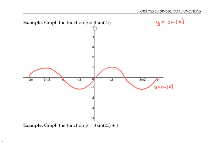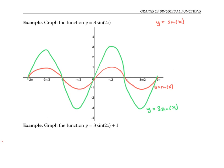The three on the outside stretches this graph vertically by a factor of three, while the two on the inside compresses it horizontally by a factor of one half.